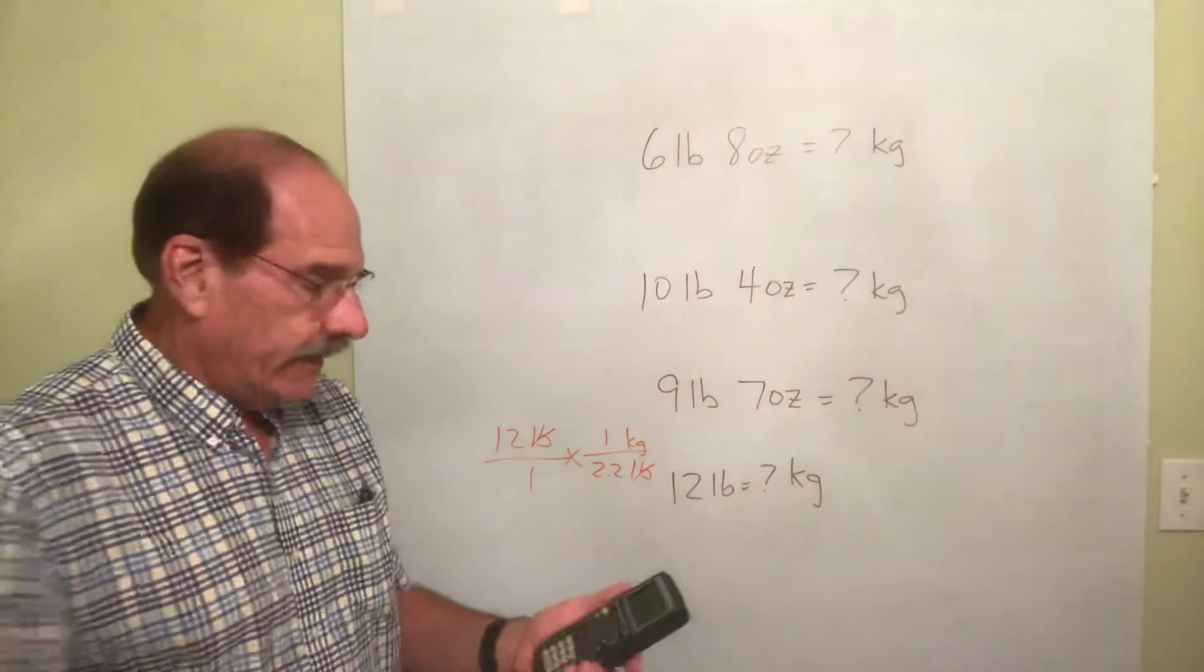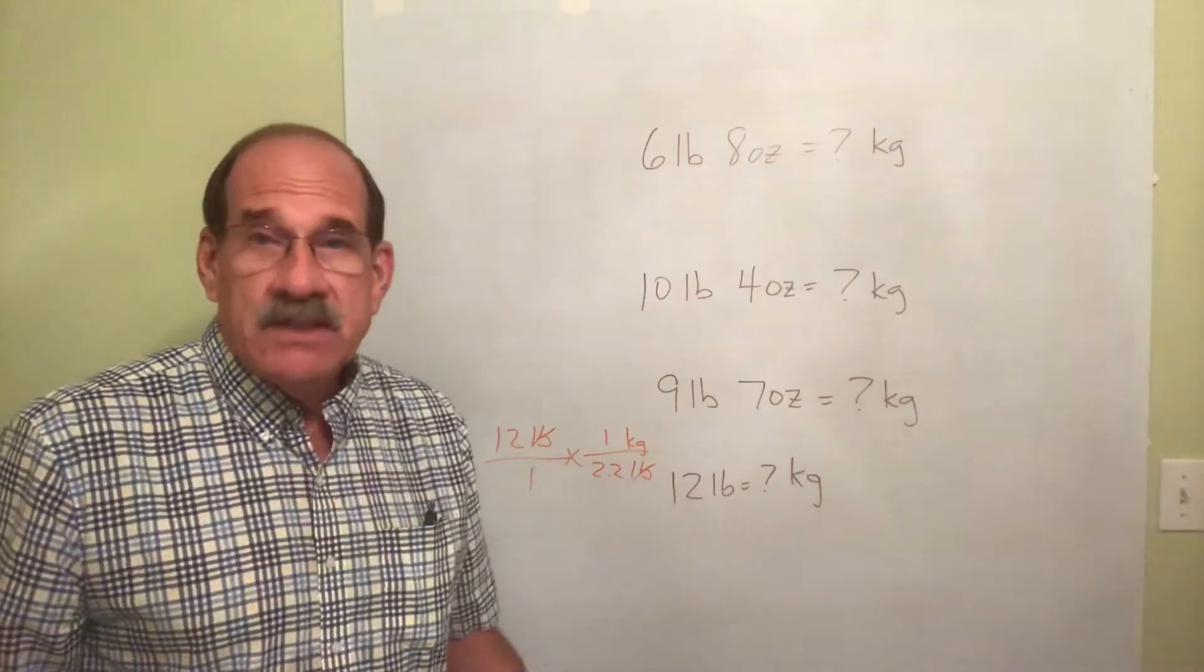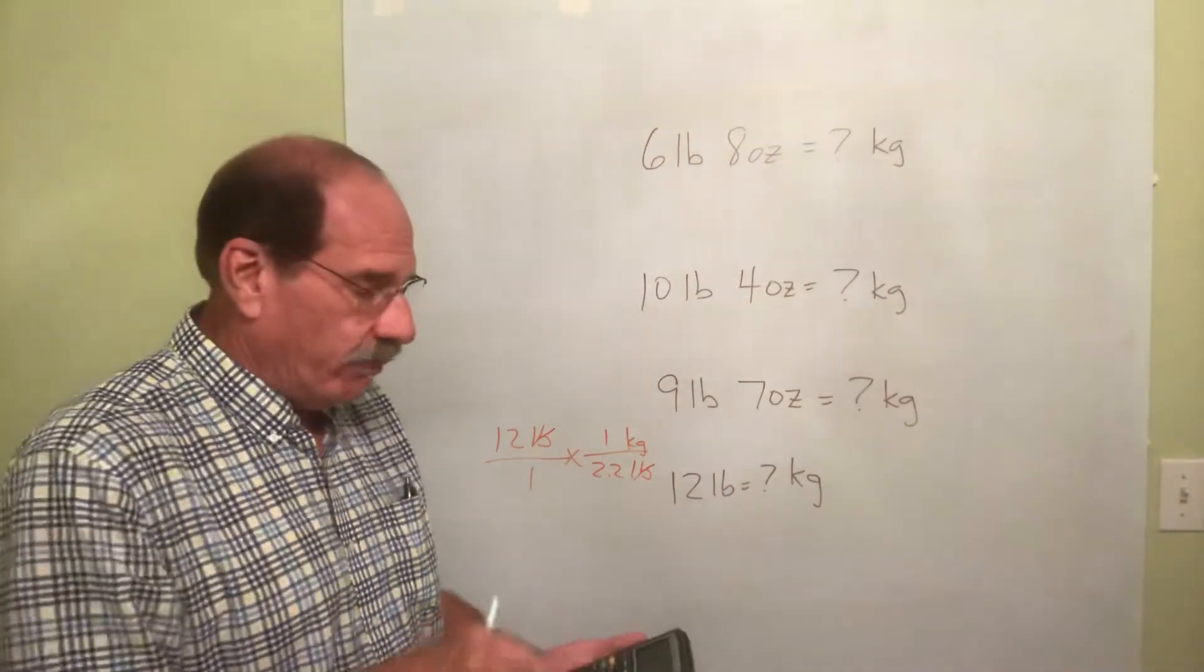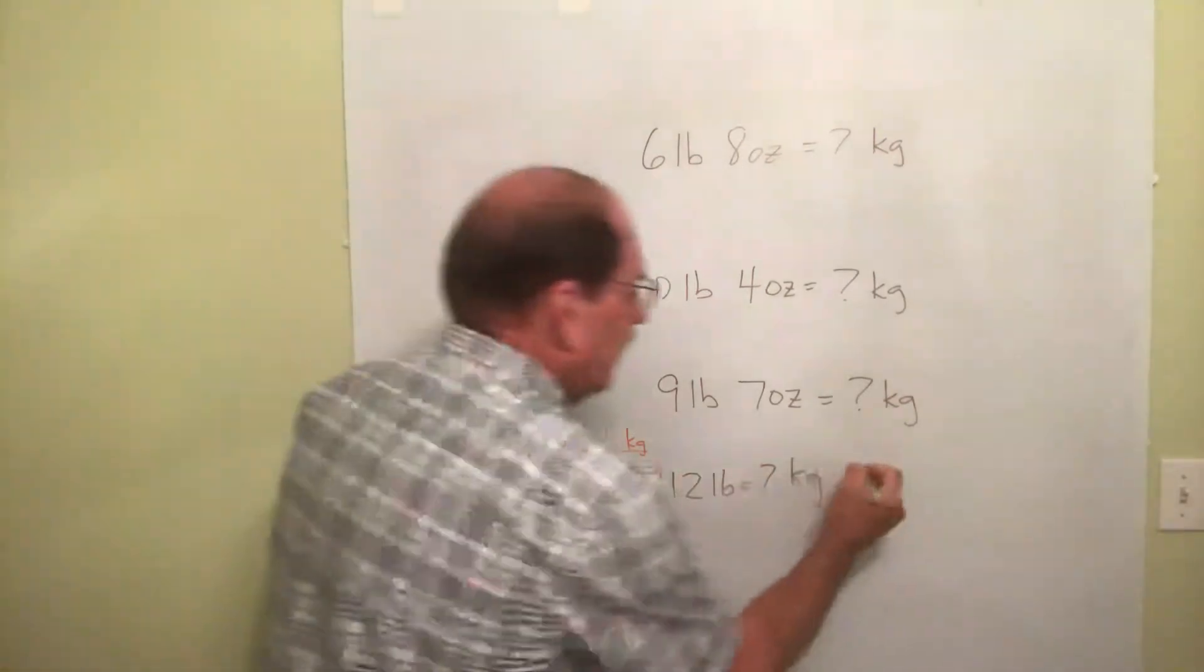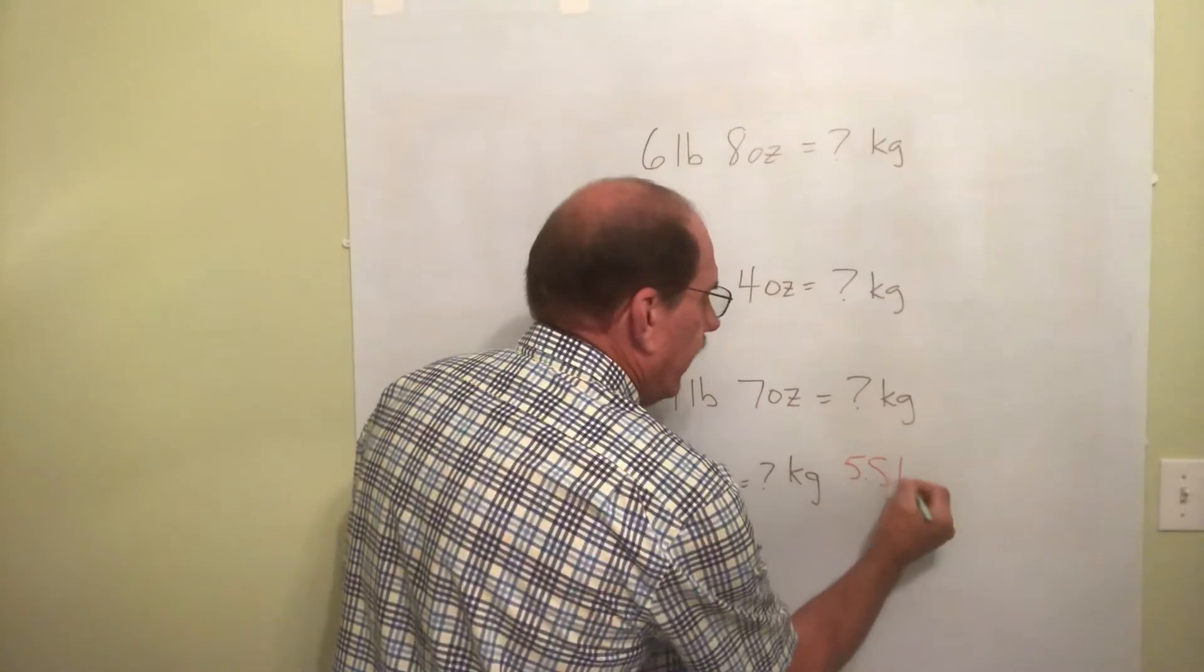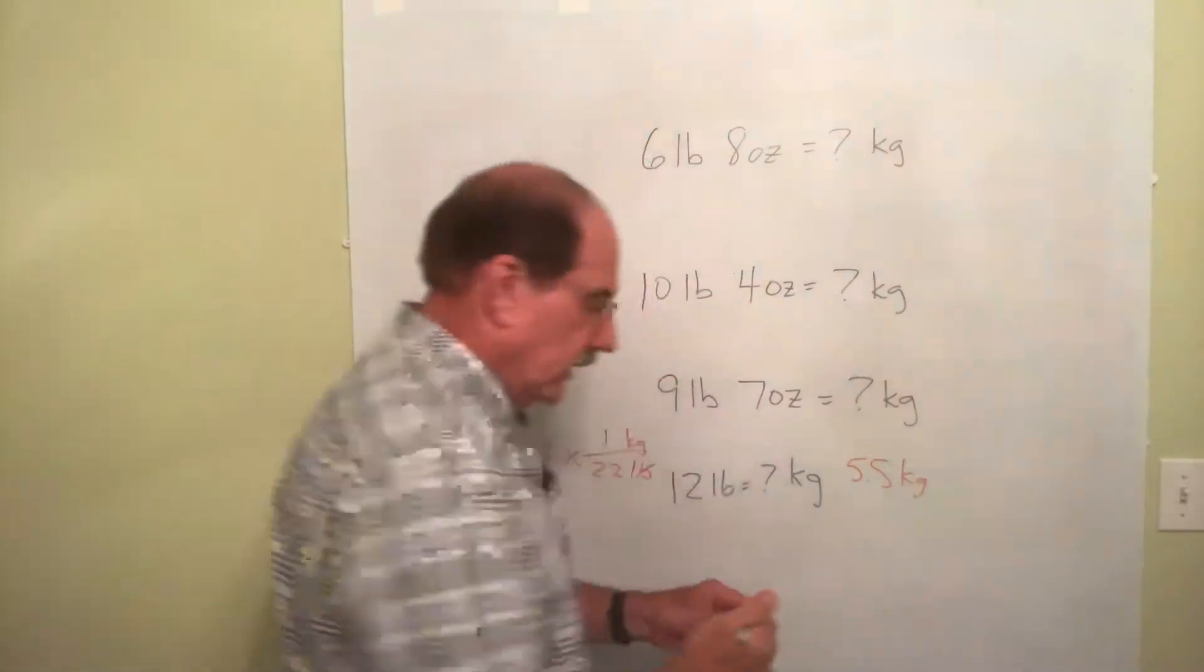Now at this point, if you round off to tenths, I'm okay with that. So 5.45 would be 5.5. So the kiddo weighs 5.5 kilograms.